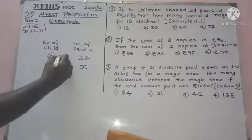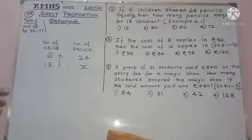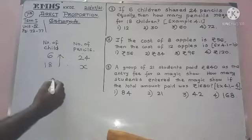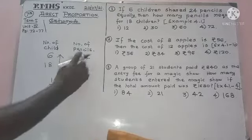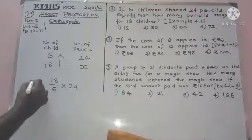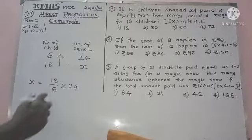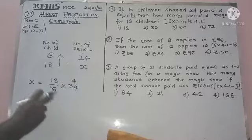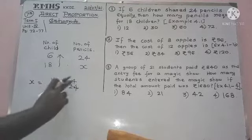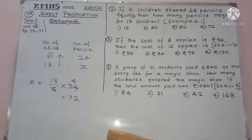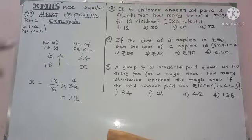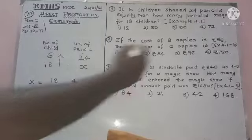The next step: the numerator is 18, and the denominator is 6. X is equal to 18 divided by 6, multiplied by 24. If I cancel, 18 divided by 6 gives 3. Then 3 multiplied by 24 gives 72. So X is 72. That is the answer.